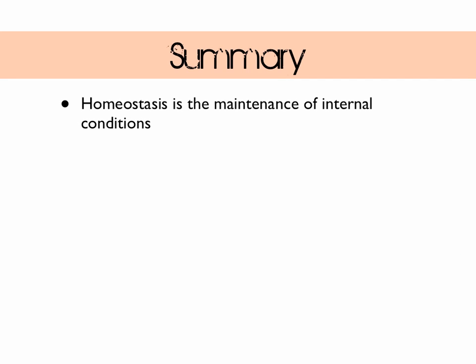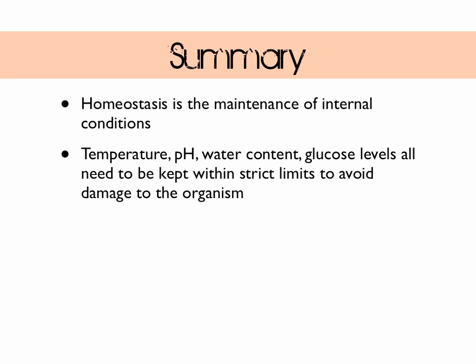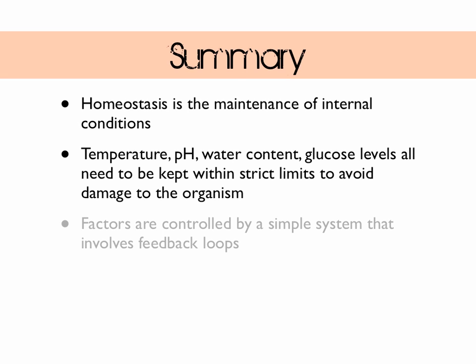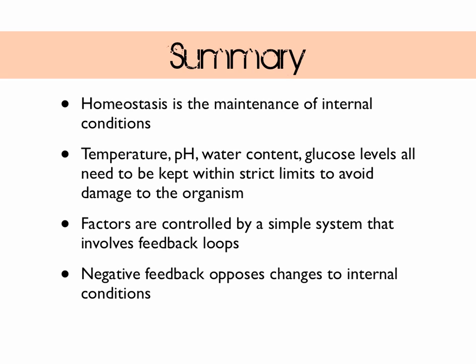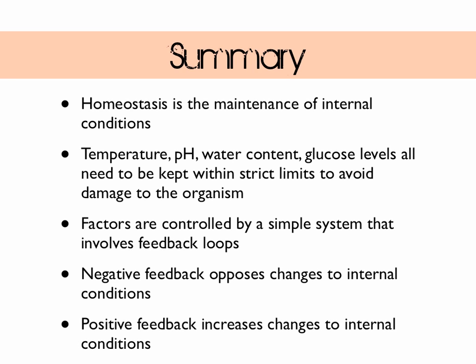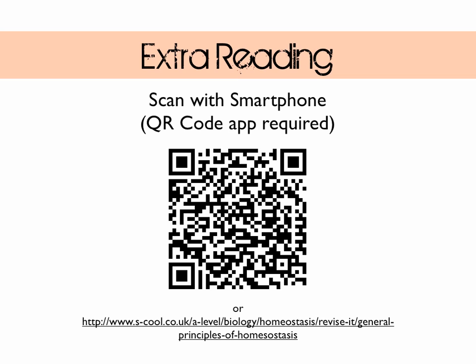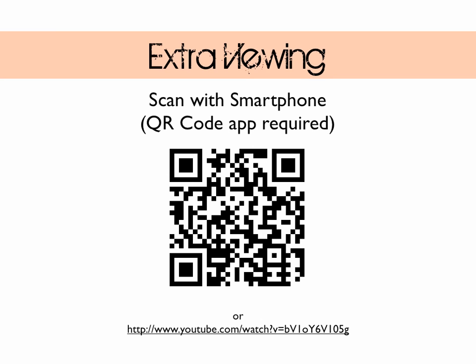To summarize: homeostasis is the maintenance of internal conditions. Temperature, pH, water content, and glucose levels all need to be kept within strict limits to avoid damage to the organism. These factors are controlled by a system that involves feedback loops. Negative feedback opposes changes to internal conditions; positive feedback increases changes to internal conditions. For extra reading, there's a link and QR code to an S-cool introduction to homeostasis, and a video using heart rate as a different example of how homeostasis is controlled. Thanks for watching.